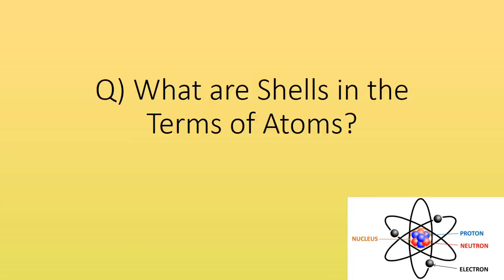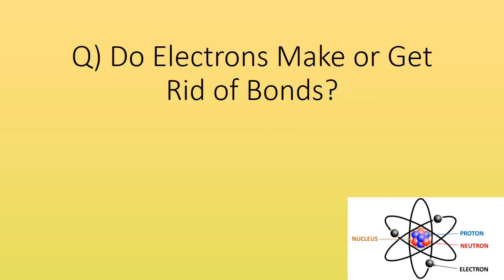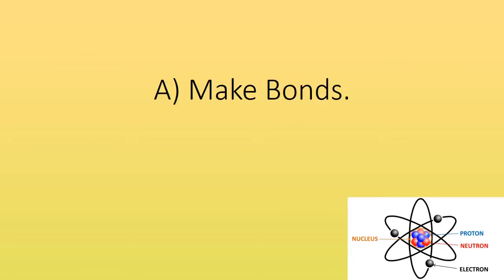What are shells in terms of atoms? Where electrons move around the nucleus in layers. Do electrons make or get rid of bonds? Make bonds.